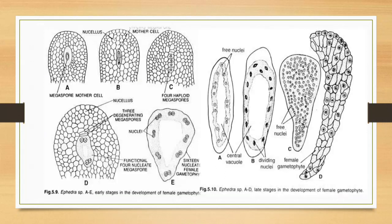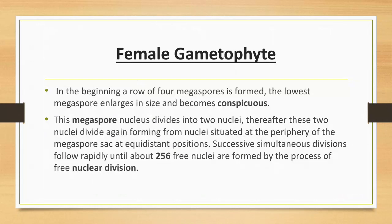Female gametophyte: The megaspore mother cell produces four haploid megaspores. In the beginning, a row of four megaspores is formed; the lowest megaspore enlarges in size and becomes functional. The nucleus divides into two nuclei, and these two nuclei divide again forming four nuclei situated at the periphery of the megaspore sac at equidistant positions. Successive simultaneous divisions follow rapidly until about 256 free nuclei are formed by the process of free nuclear division.